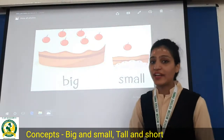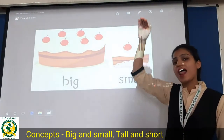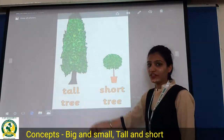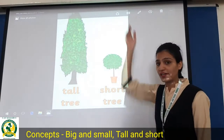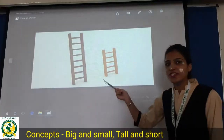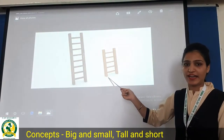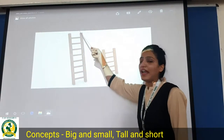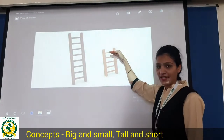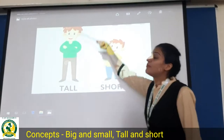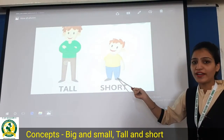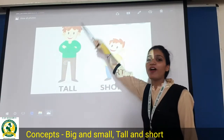The second concept is tall and short. See, this is a tall tree. This is a tall ladder, and this is a short ladder. This is a tall man, and this is a short boy.